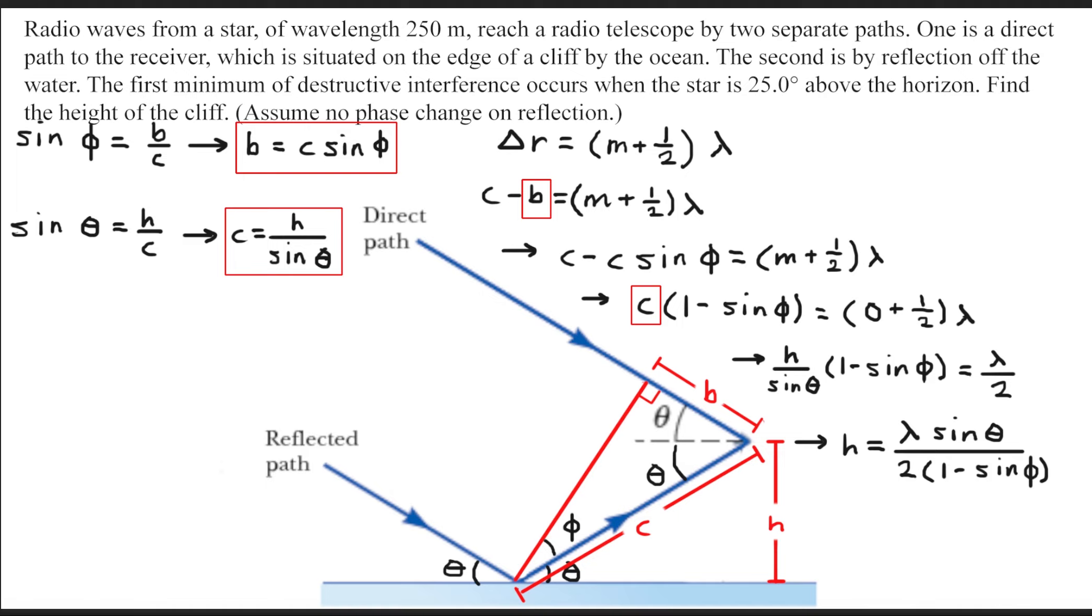Now we have all of the pieces of information needed to solve for the height except the angle phi. So we need to find out what the measurement of that angle is. Focus your attention on this black triangle once again and recall that all angles of a triangle must add up to 180 degrees. With that in mind, we can solve for the measurement of the angle phi. We already know that theta is 25 degrees. So after making some rearrangements, we can get that the angle phi is 40 degrees.